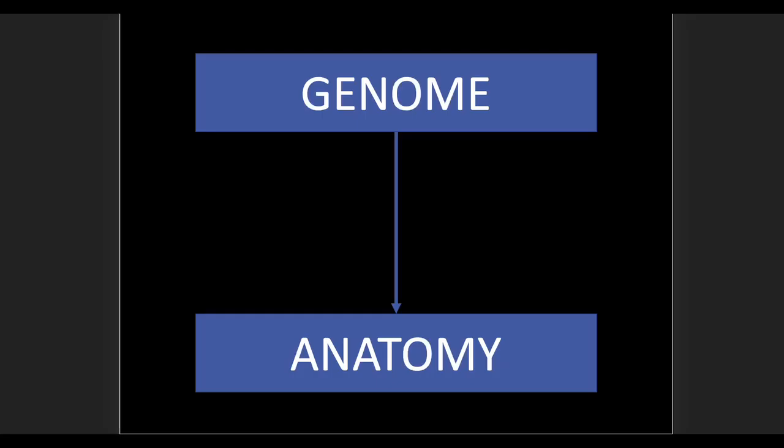I want to show you a new Michael Levin paper that's just coming out, but first we need to review some foundational basics of evolutionary theory. Namely, that the genome provides the information to construct the body, construct the anatomy. Of course, it depends on the nutrients available in the environment. But nonetheless, the genome provides the information to construct the anatomy. So you see the arrow going one way here from the genome to the anatomy.